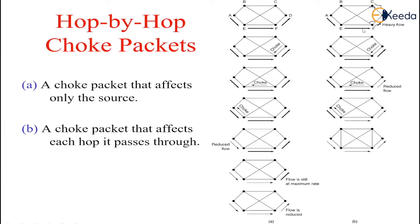In the second mechanism, again if congestion is observed by D, it generates a choke packet and forwards it to F. Then F takes corrective action, reduces the flow, and forwards the choke packet to E. When E receives the choke packet, it reduces the flow and forwards the choke packet to A. Finally, A also reduces its transmission rate. That means every router takes part in reducing the transmission rate. So it is called a choke packet that affects each router it passes through.